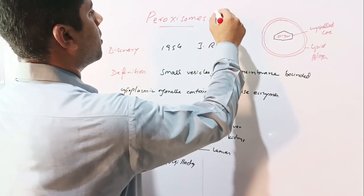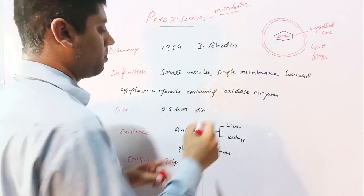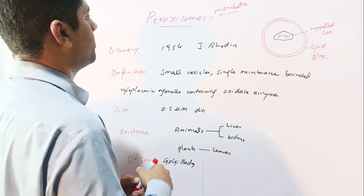Peroxisomes are small subcellular microbodies. Due to their small size, these are called microbodies and these are cytoplasmic organelles.